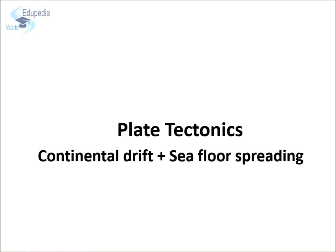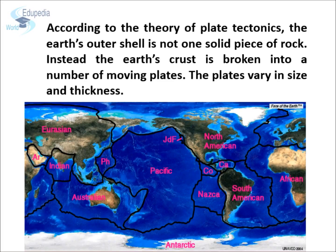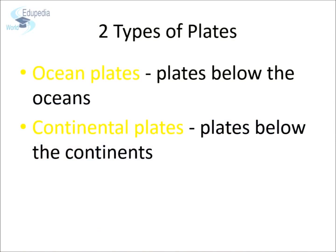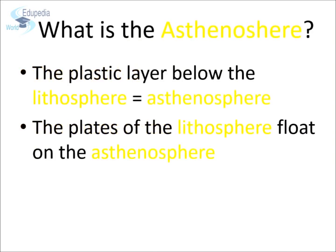By combining the ideas of both these theories, we can say that Earth's crust is not one single solid piece of rock. Instead, Earth's crust is broken into pieces, and these pieces are called tectonic plates. These plates differ in size and thickness. They are divided into basically two types: the continental plate and the oceanic plate. The continental plate carries the continents over it, while the oceanic plate carries oceans over it.